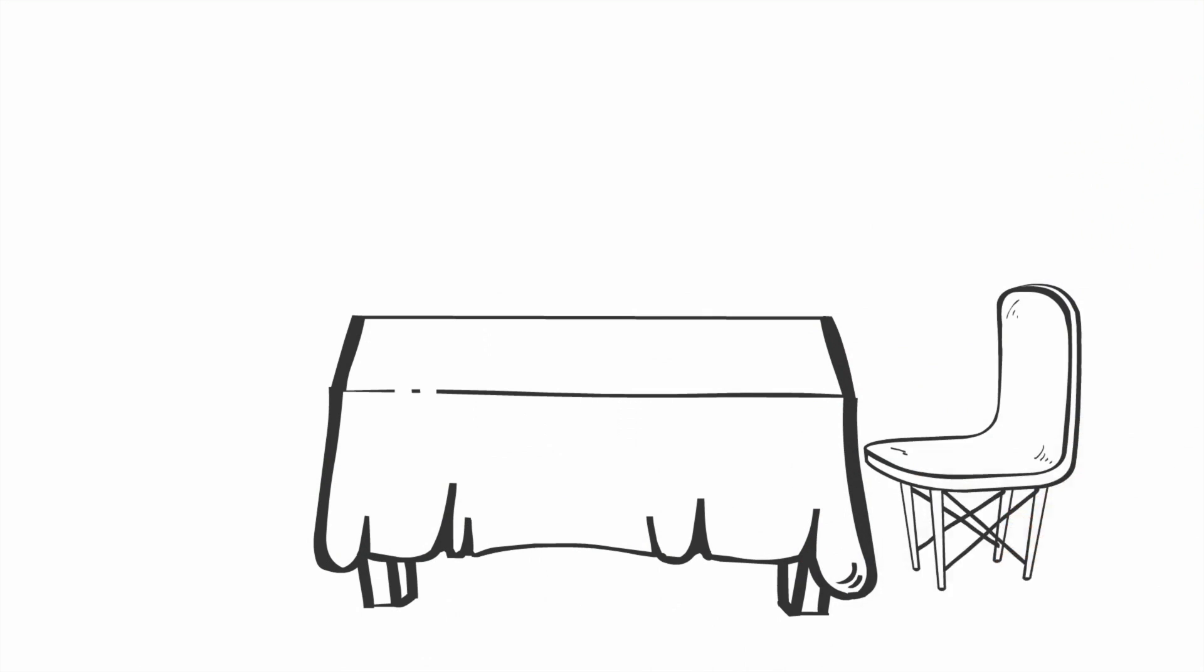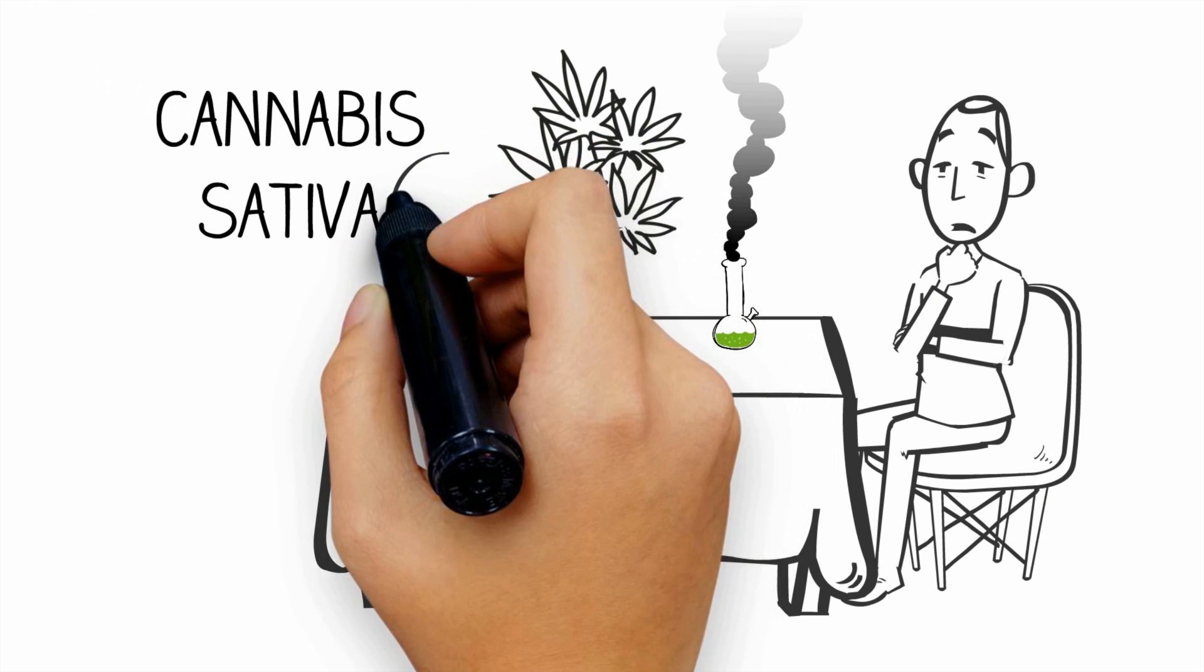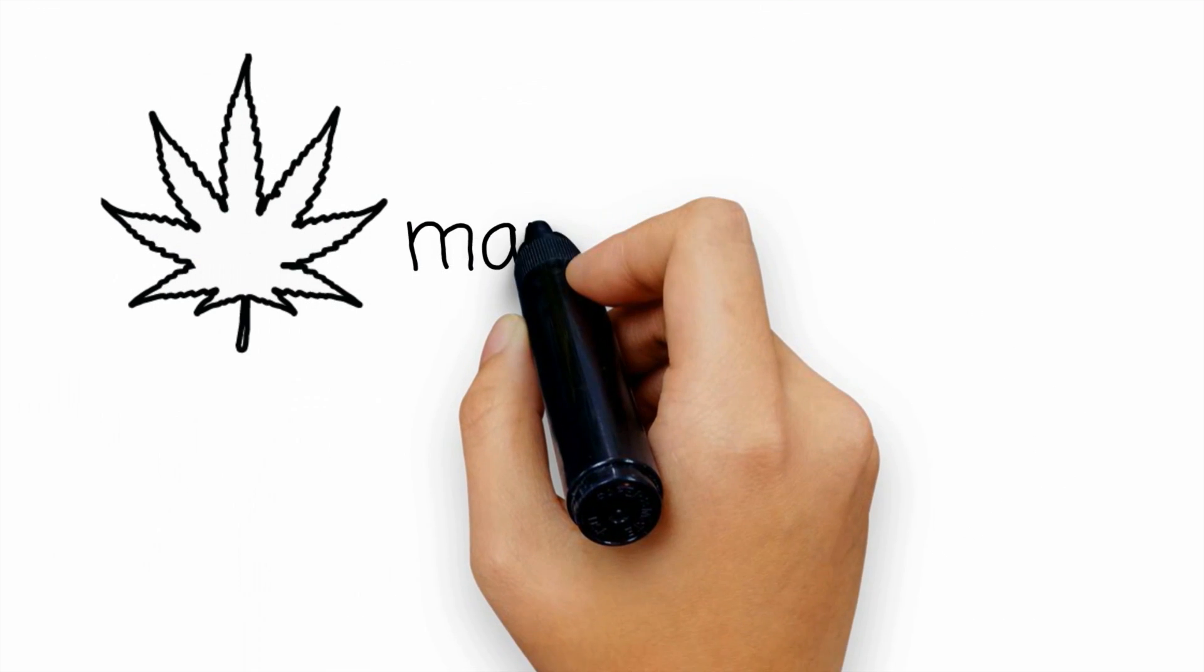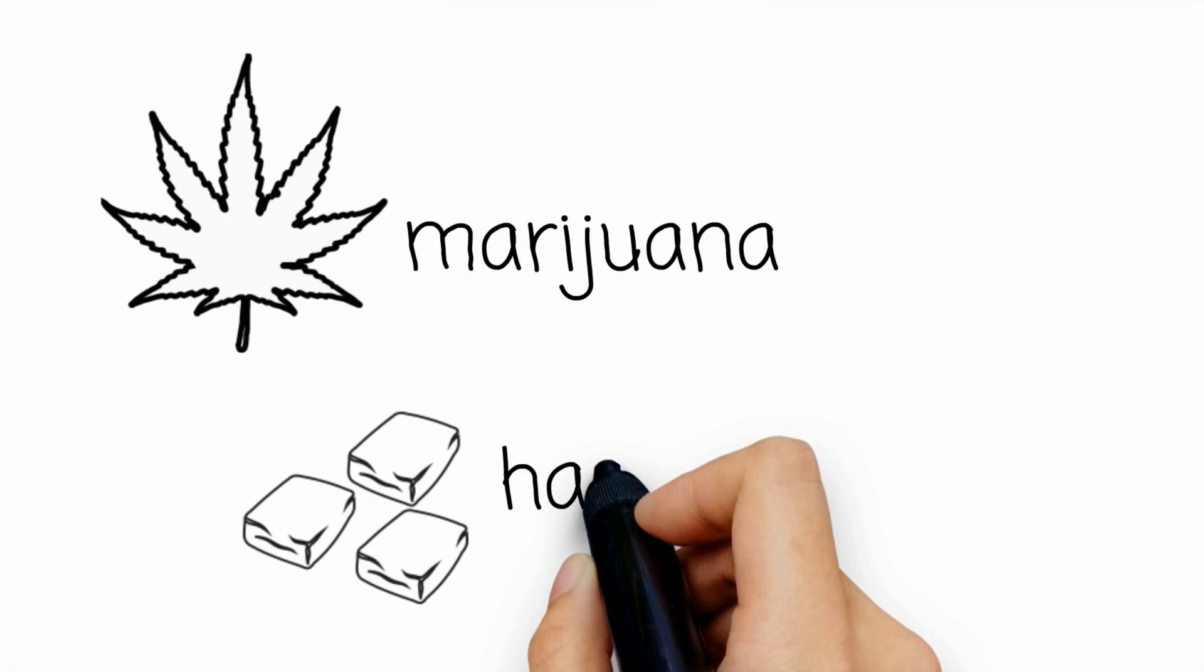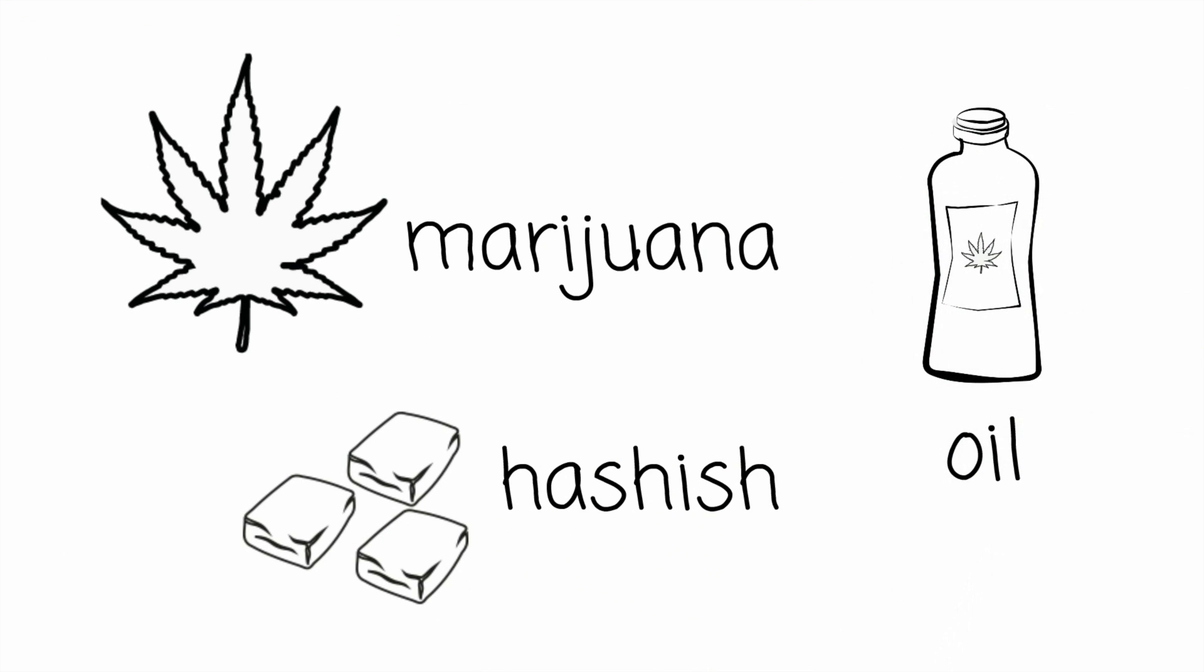First up, here's a quick overview of what cannabis is. Cannabis comes from the cannabis sativa plant, just like this one. Its dried leaves and flowers are marijuana, the gummy stuff is hashish, and the oil that comes from the hashish is cannabis oil. Simple so far, right?